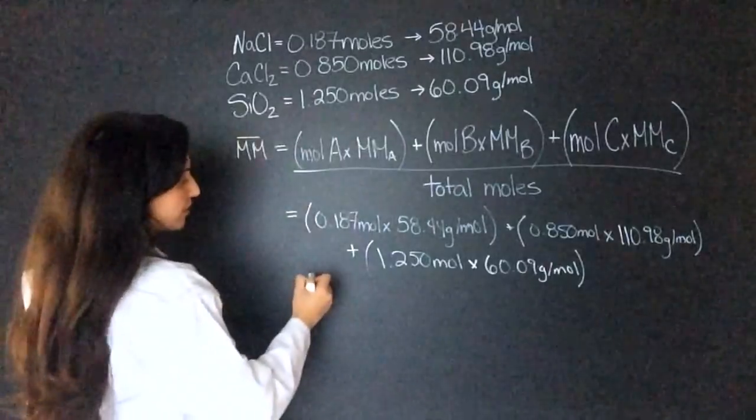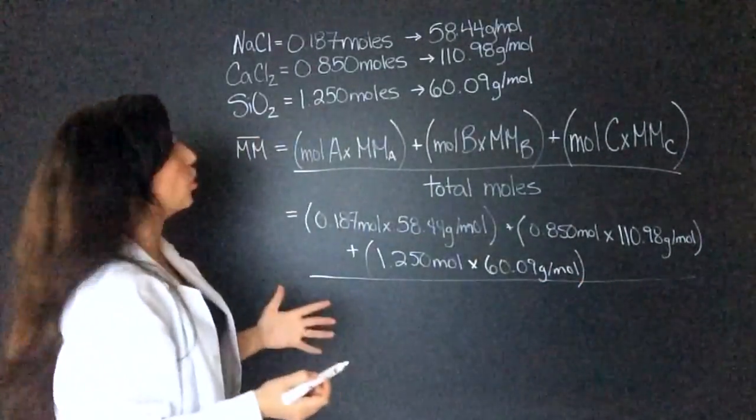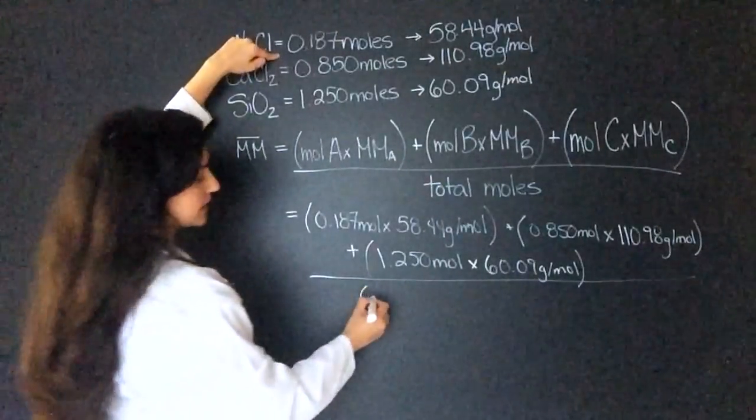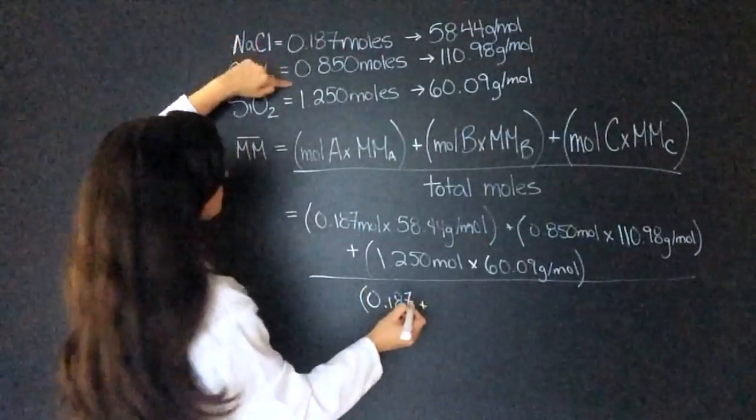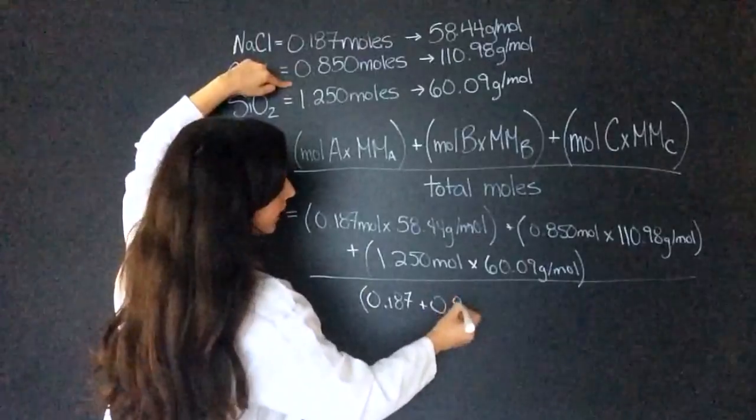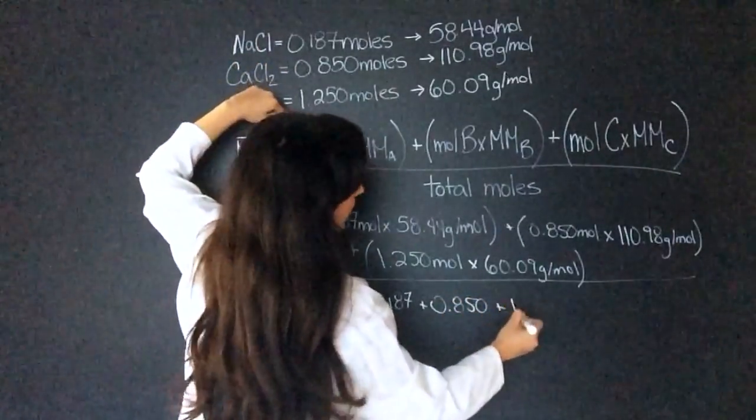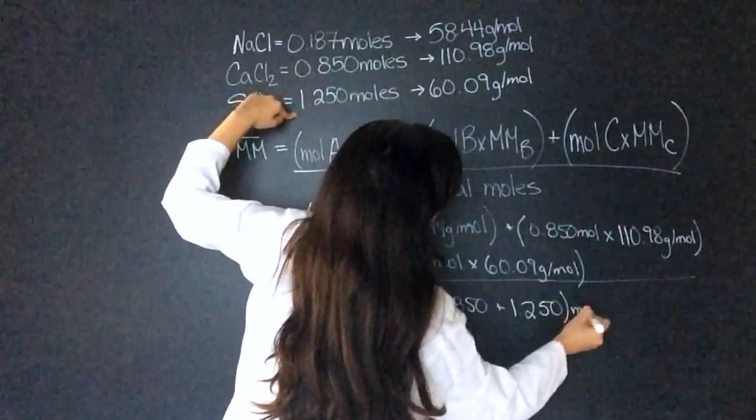Now, we divide all of that by the total moles. Now, I didn't calculate this first, so what I'm going to do is just do a bracket and add these. 0.187 plus 0.850 plus 1.250 mole.